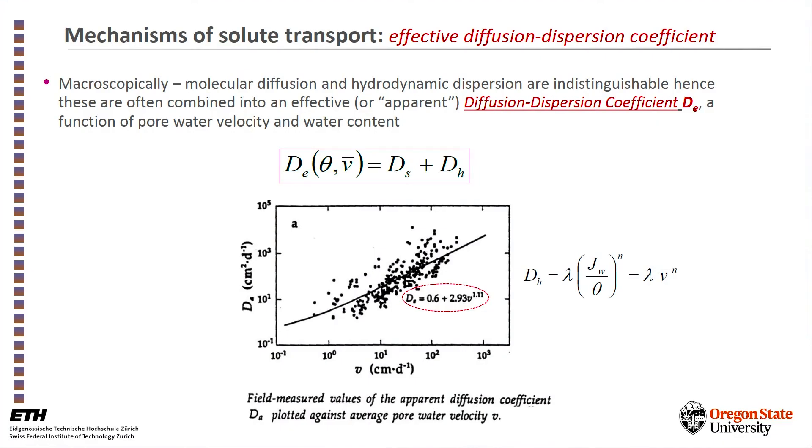In practice, the molecular diffusion and the hydrodynamic dispersion are almost indistinguishable. Both of them operate on the gradient of solutes, so we tend to lump them together to an apparent diffusion-dispersion coefficient, as you see here in this equation. I'm also showing in this equation some experimental data of this apparent diffusion coefficient as a function of velocity. It has in it two terms: one that reflects the molecular diffusion and one of the hydrodynamic dispersion. And in most cases, hydrodynamic dispersion dominates.